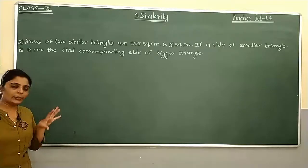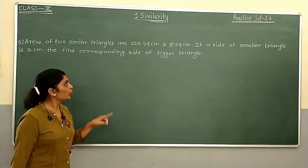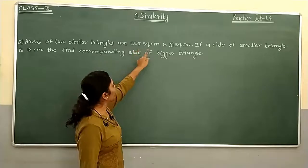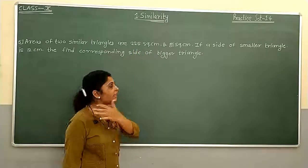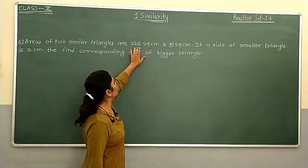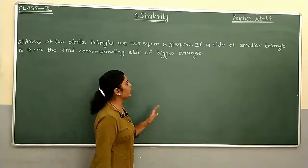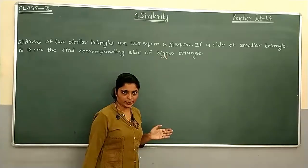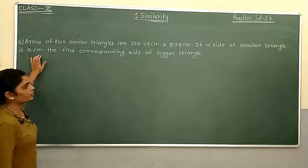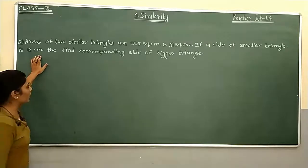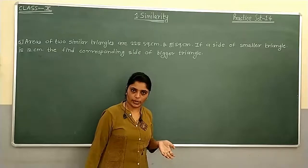We have two similar triangles given. The bigger triangle has an area of 225 square cm, and the smaller triangle has an area of 81 square cm. The side of the smaller triangle is 12 cm, and we have to find the corresponding side of the bigger triangle.